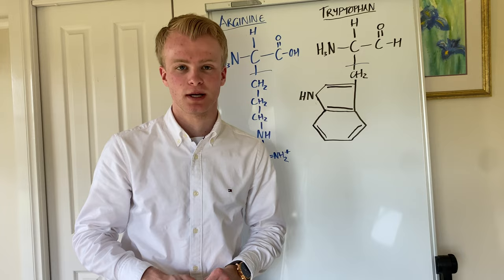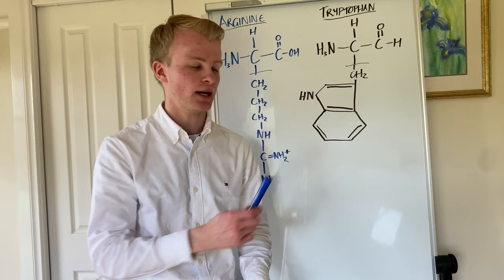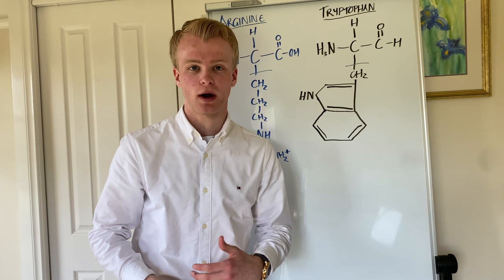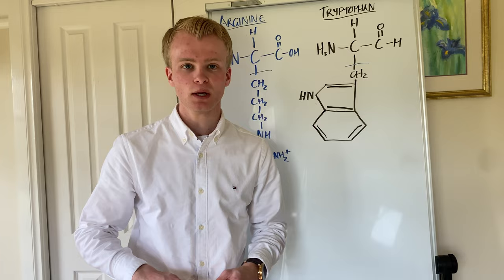Since these amino acids have very different properties, they will want to be near different amino acids and thus fold differently depending on which is at position 408. This is why the enzyme phenylalanine hydroxylase is dysfunctional when there is a tryptophan there — because the protein ultimately folds differently, preventing it from functioning normally.